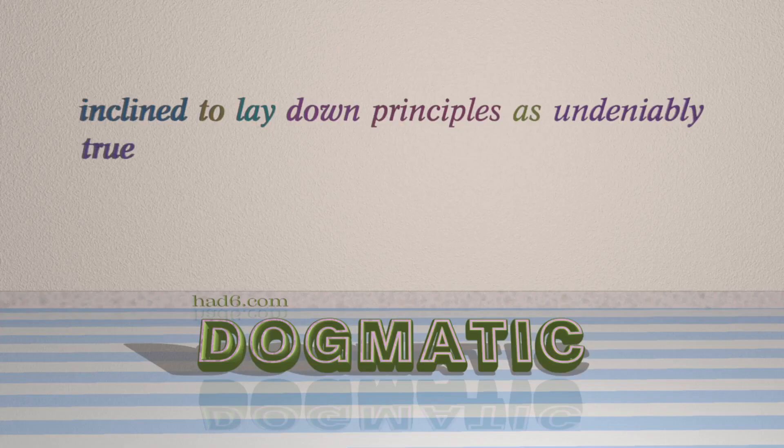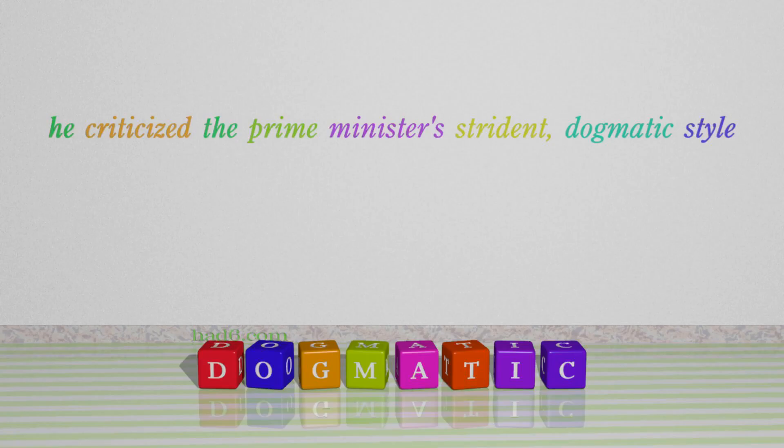Number 7: Dogmatic. Which means inclined to lay down principles as undeniably true. For example: He criticized the Prime Minister's strident, dogmatic style.